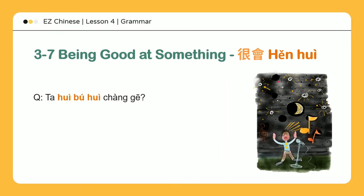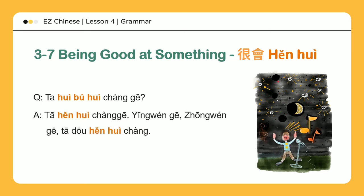他会不会唱歌? — Can he sing? 他很会唱歌 — He can really sing. 英文歌、中文歌，他都很会唱 — He can sing both English and Chinese songs very well.